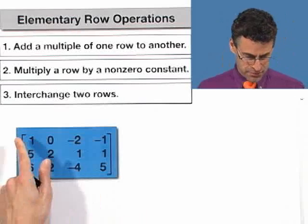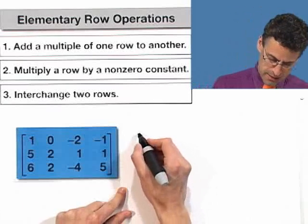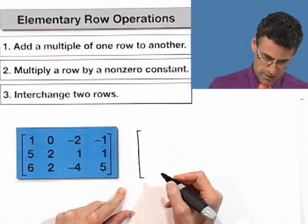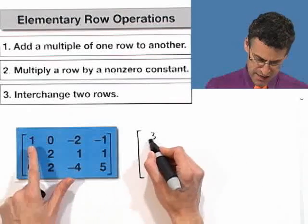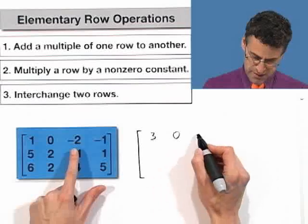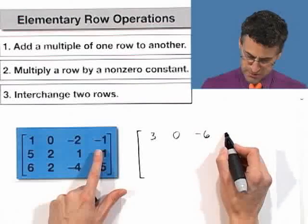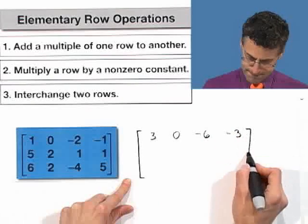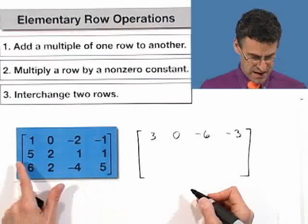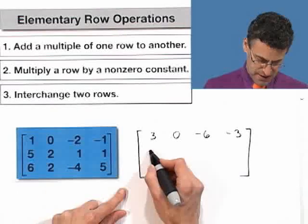So if we take the first row and we multiply it by 3, then this becomes a 3, this is a 0, this becomes a negative 6, and this becomes a negative 3. I'm going to do nothing here, so I'm just going to write that out.